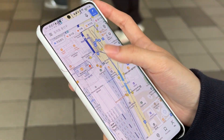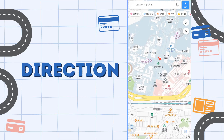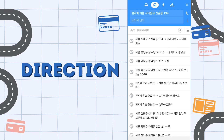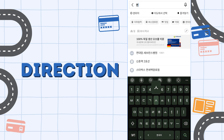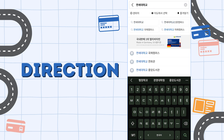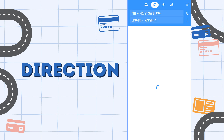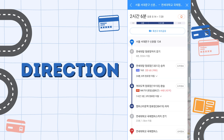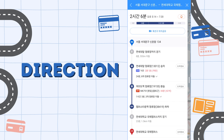First, you can get directions. Press the blue button on the top right and simply insert your starting point and destination. It will display the most optimal route along with many options you can select from.